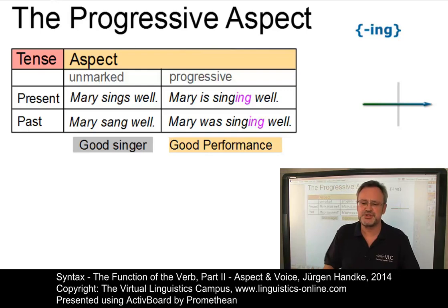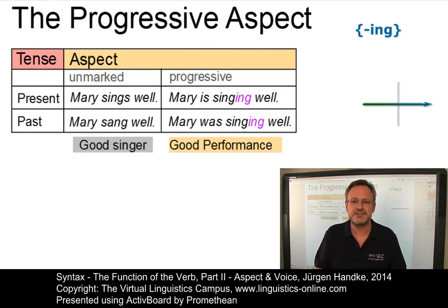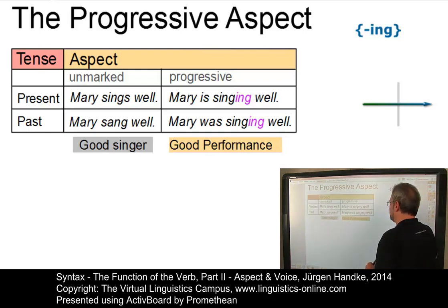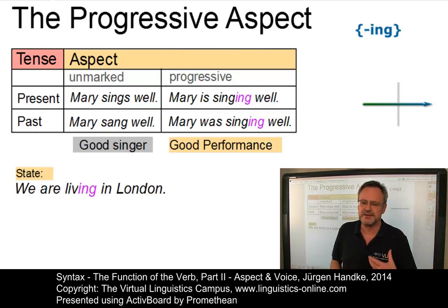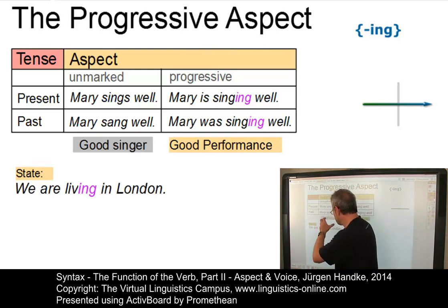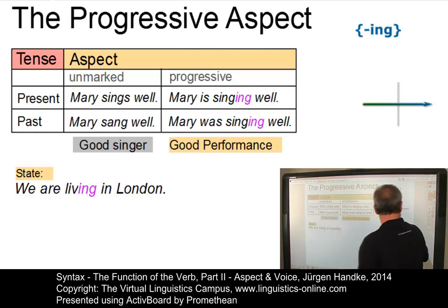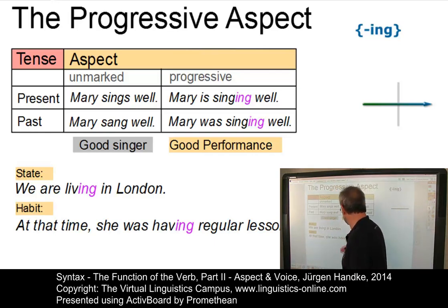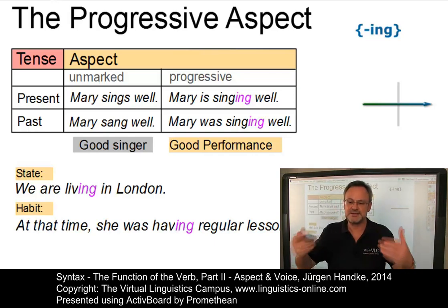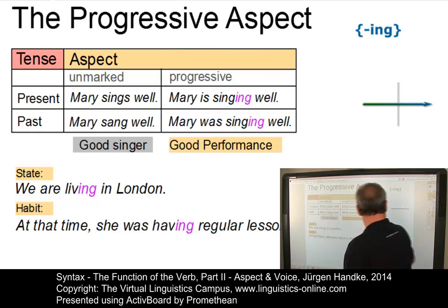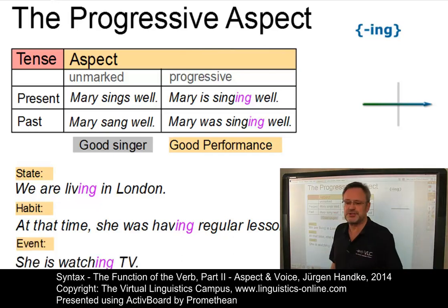The verb senses — state, habit, and indefinite events, which we already discussed in the context of the perfective aspect — are interpreted differently when used in the progressive aspect. For example, We are living in London simply means a certain state at this moment in time. Or, with the habitual progressive: at that time she was having regular lessons — the habit takes place over a limited period. And in the event progressive: she is watching TV — the duration has not come to an end yet.